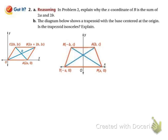We're going to look at this trapezoid. They tell us it's a trapezoid, they've already graphed and labeled it with letters, and they ask if it's an isosceles trapezoid. Remember, an isosceles trapezoid has congruent legs — those two legs would be congruent. So we need to see if they're the same length using the distance formula: √((x₂ − x₁)² + (y₂ − y₁)²).